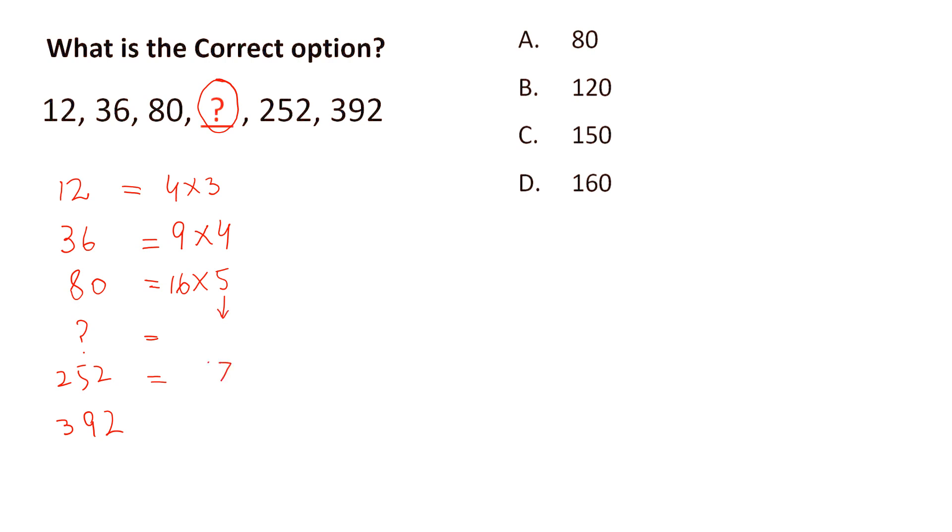So 252 divided by 7 gives us 36, then 8. So 392 divided by 8 gives us 49.